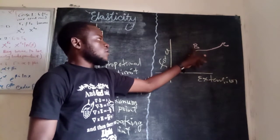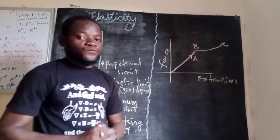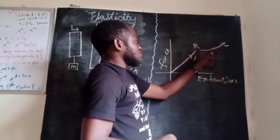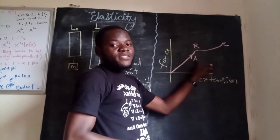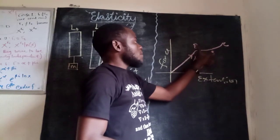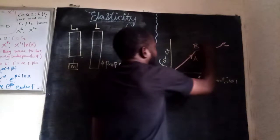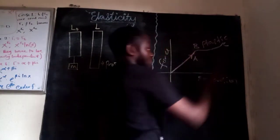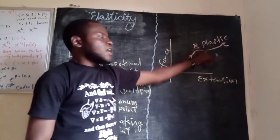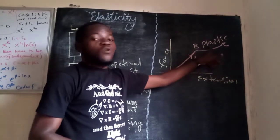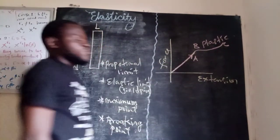Immediately after the proportional limit, we have the elastic limit, where the graph begins to curve — it's no longer straight. That tells you the material is no longer obeying Hooke's law, which we are going to discuss. From the elastic limit, the material reaches the maximum point, then the breaking point. Between the maximum point and the breaking point, the material is no longer an elastic material but has become a plastic. A plastic does not obey Hooke's law.